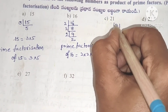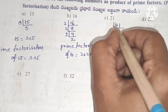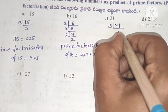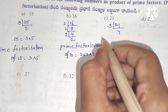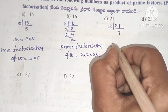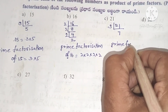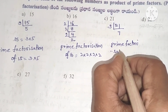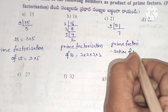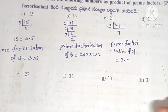Next, 21. It is not in the 2 table because the units place is 1, so we try 3: 3 sevens are 21. Since 7 is a prime number, we can stop. So prime factorization of 21 equals 3 into 7.